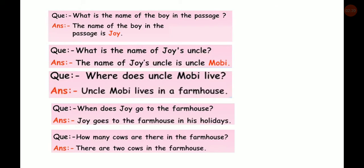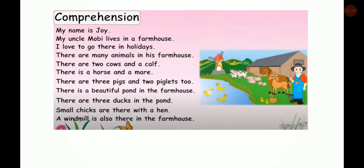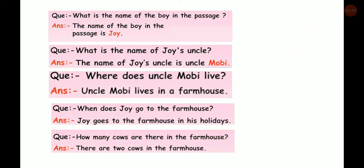Second question: what is the name of Joy's uncle? The name of Joy's uncle is Uncle Moby. Next question: where does Uncle Moby live? Uncle Moby lives in a farmhouse. We cannot write 'My Uncle Moby lives in a farmhouse' — we have to frame our answer in our own sentence.